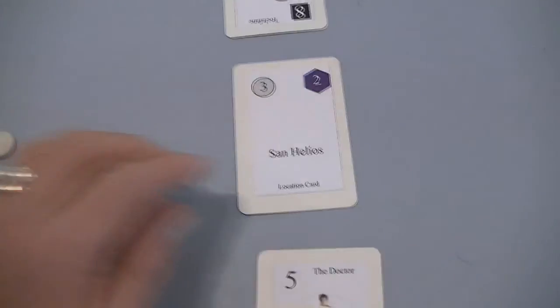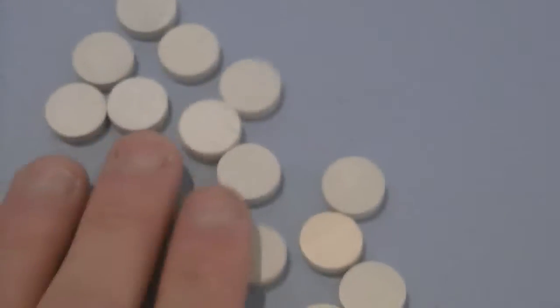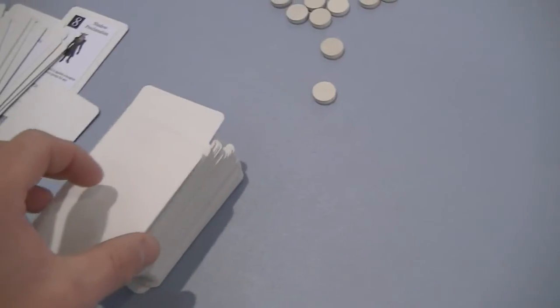When you get locations down, these indicate you'll get three time tokens. These are the time tokens here. You can cash those in to get extra cards from the deck and play those cards.